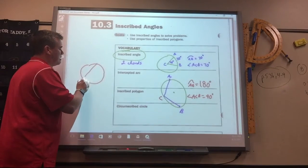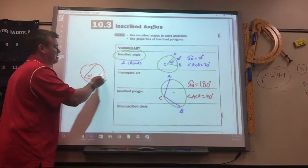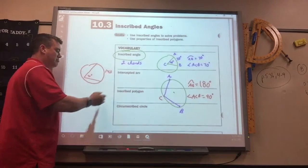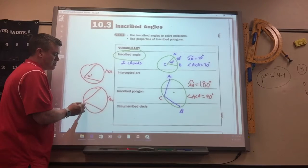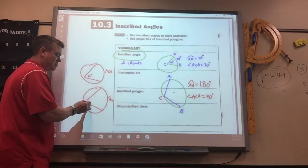So if you have an inscribed angle, if this is 70, it has to be 140, right. And then it goes backwards too. If this is 120 degrees, this one has to be 60.